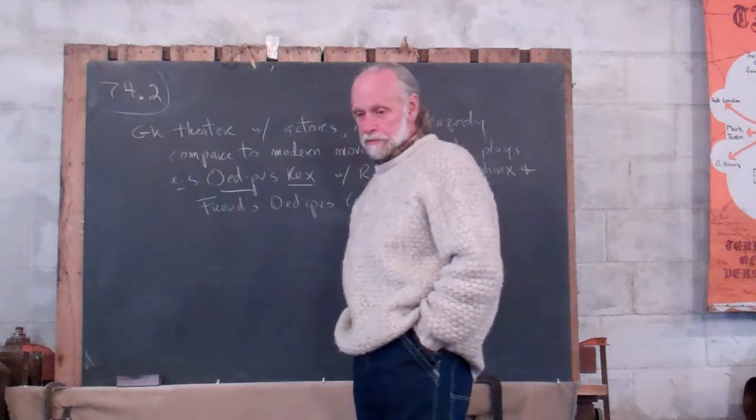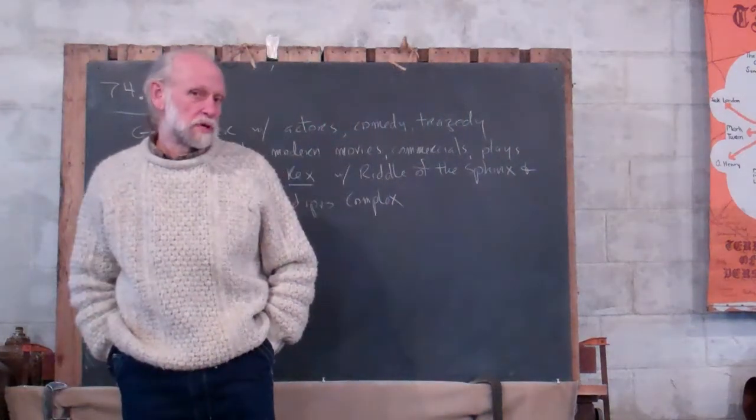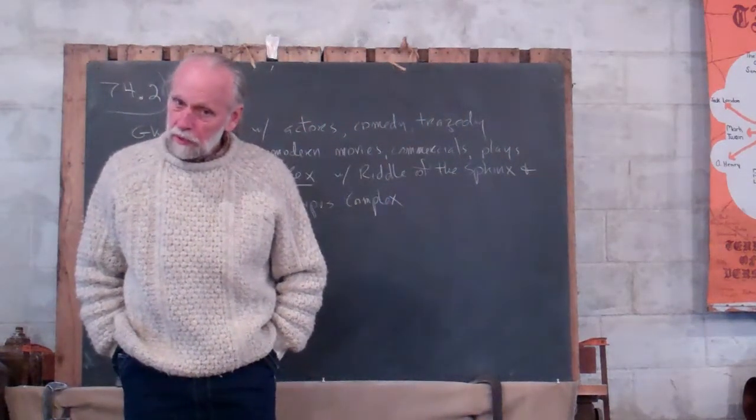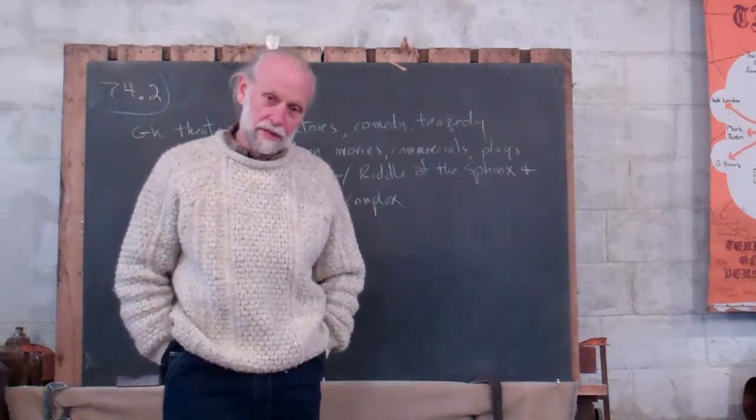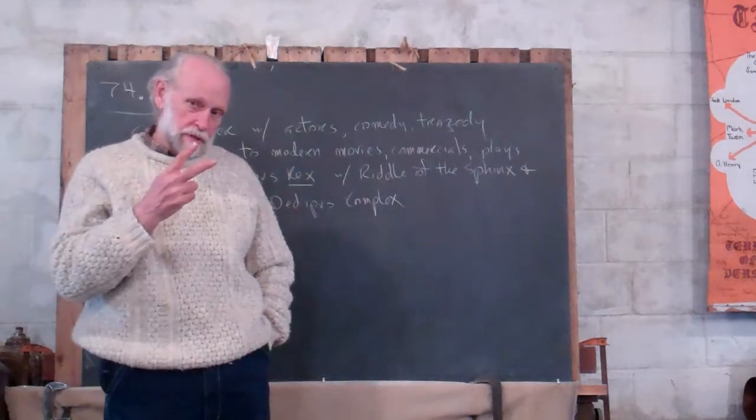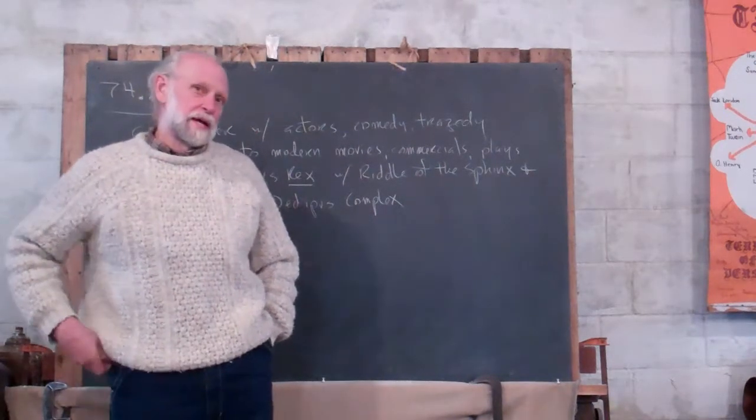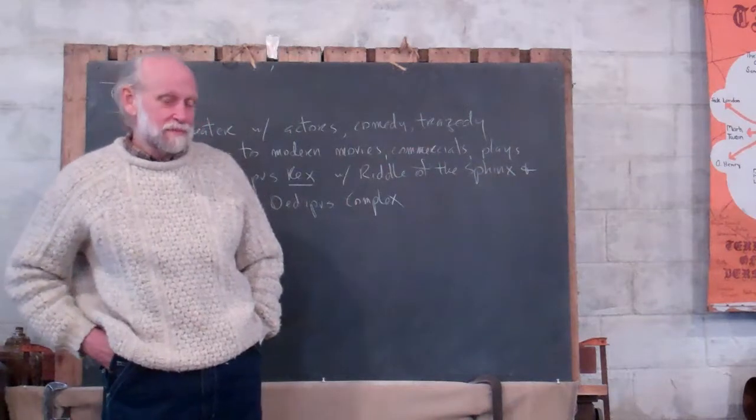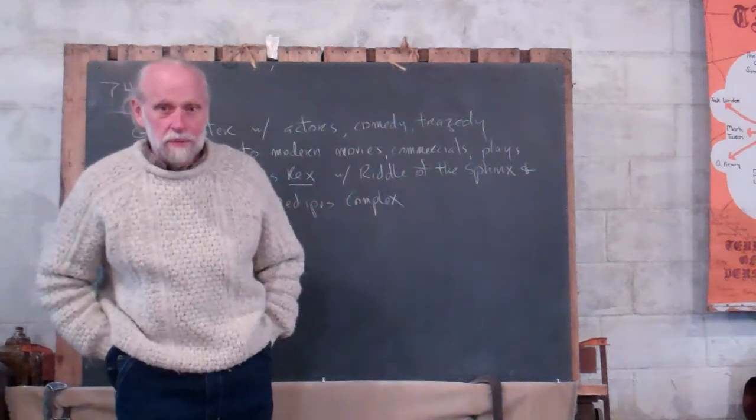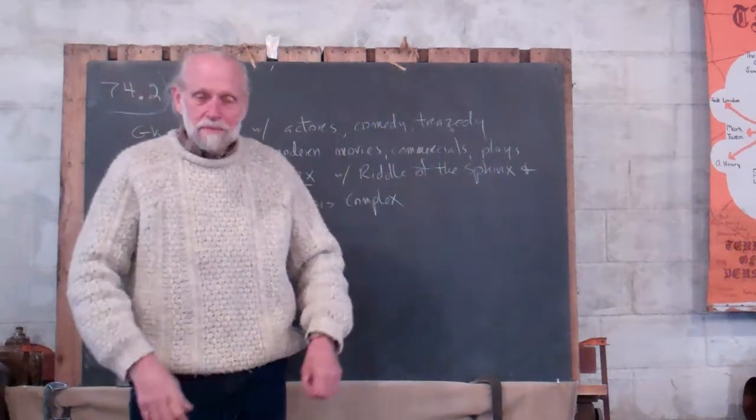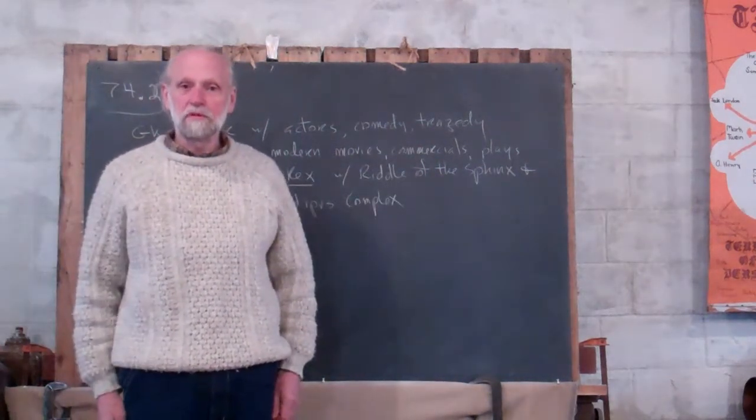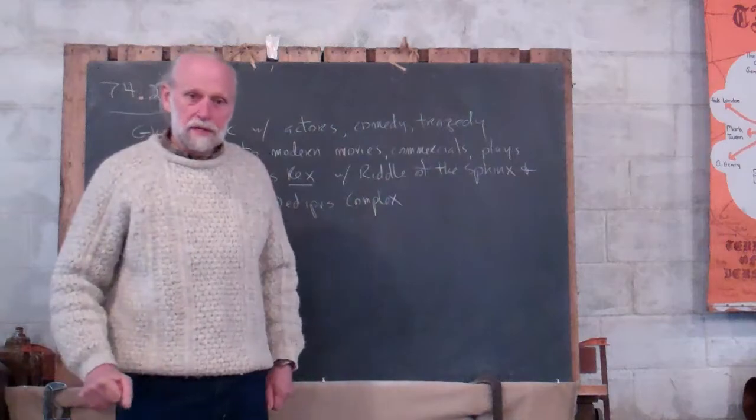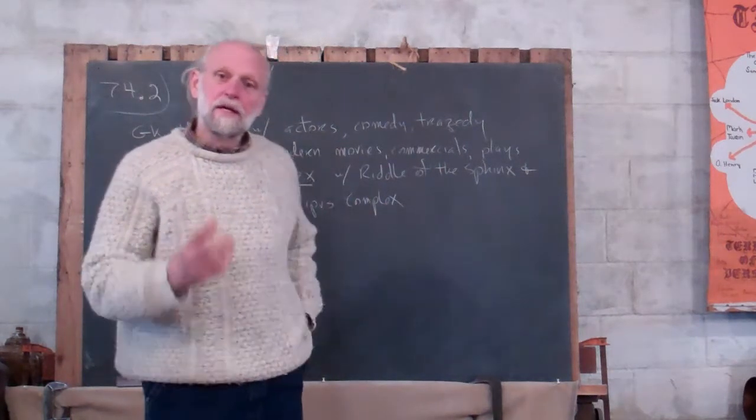Well, here's the riddle of the Sphinx. What goes on four legs in the morning, two legs in the middle of the day, and three legs in the evening. And the answer, sometimes I'll have kids know, is a human. The four legs is a baby crawling. The two legs is a human for most of his life. And the three legs is an old man with a cane. He solves it.